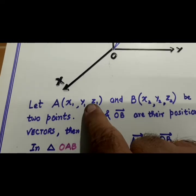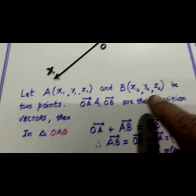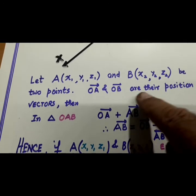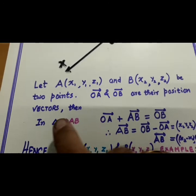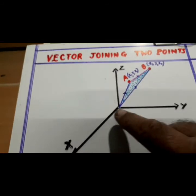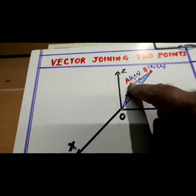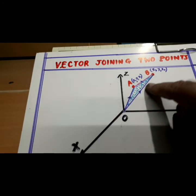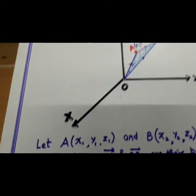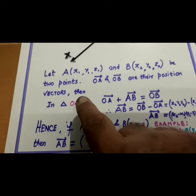A is X1, Y1, Z1. B is X2, Y2, Z2. OA and OB are their position vectors. Look here. Vectors starting from O, they are position vectors. OA is position vector. OB is position vector. So, OA and OB are their position vectors.